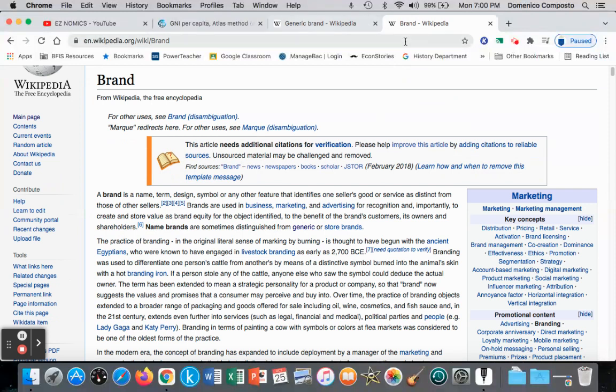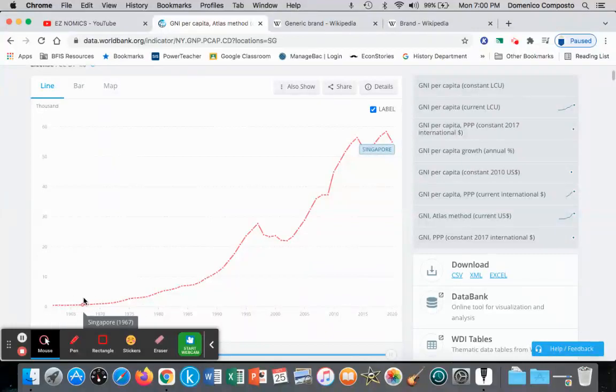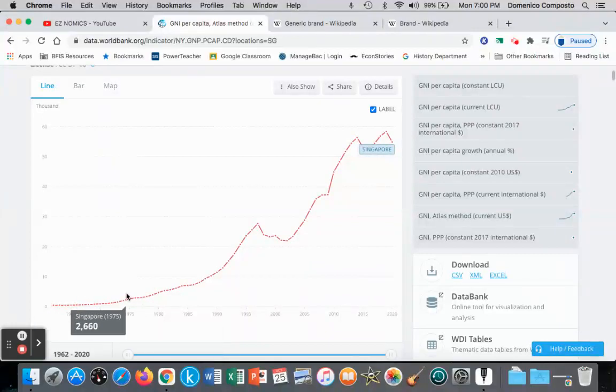And these are going to be the examples we use for the change in income. Brand name being the normal good, the generic brand being the inferior good. In the previous video, we saw Singapore as a great example of rising gross national income over time. In this video, we're going to particularly focus on what happens when incomes fall.